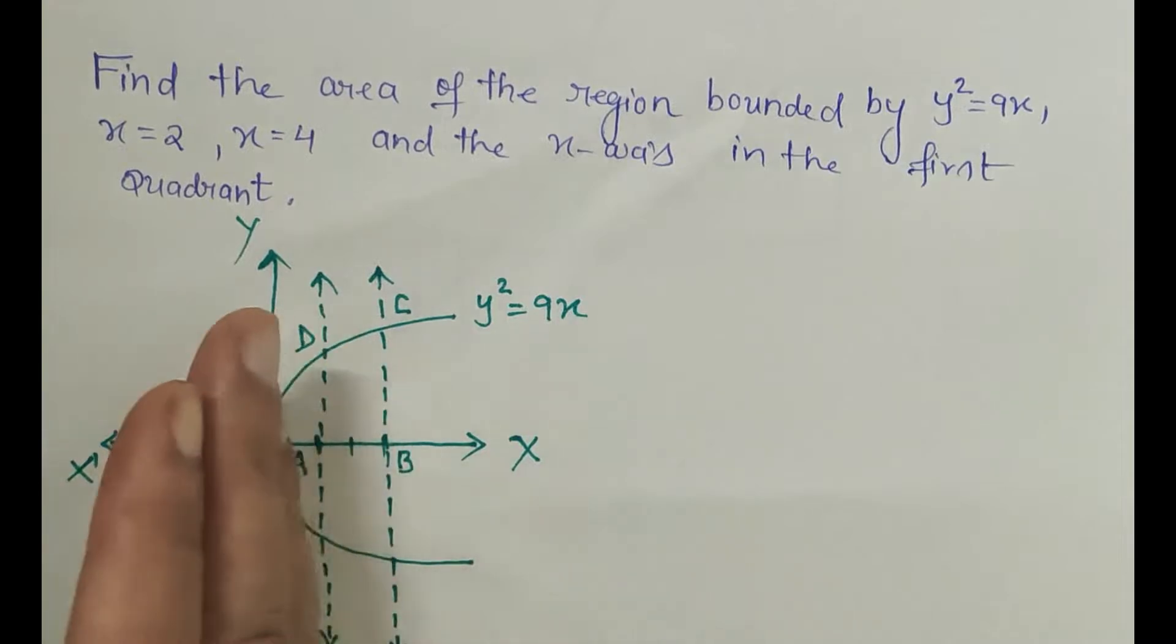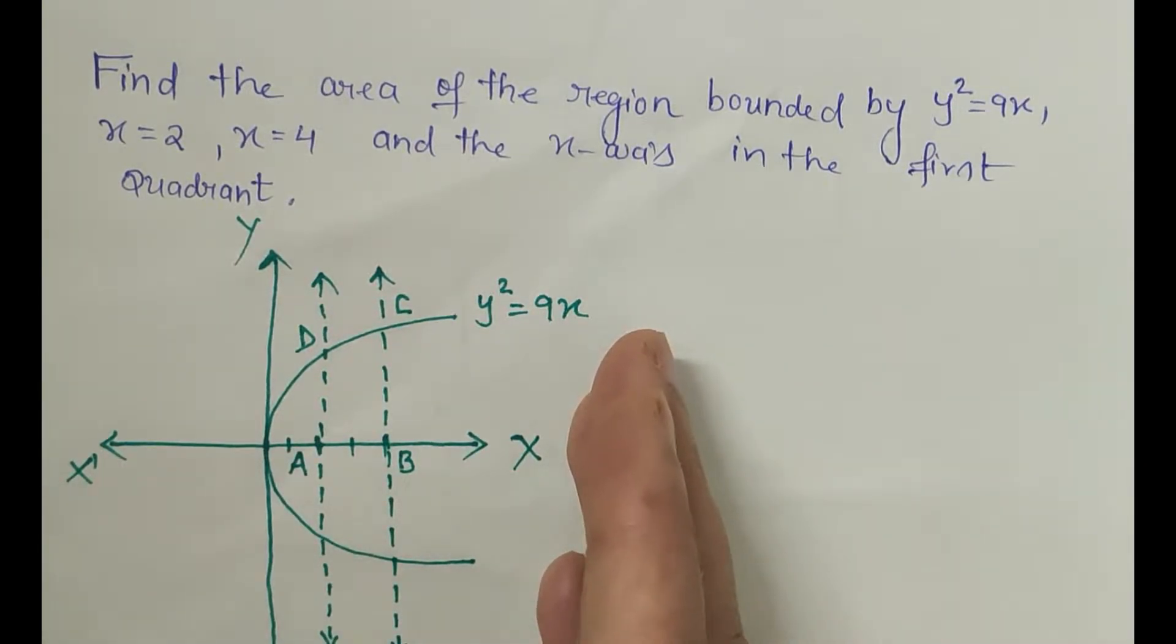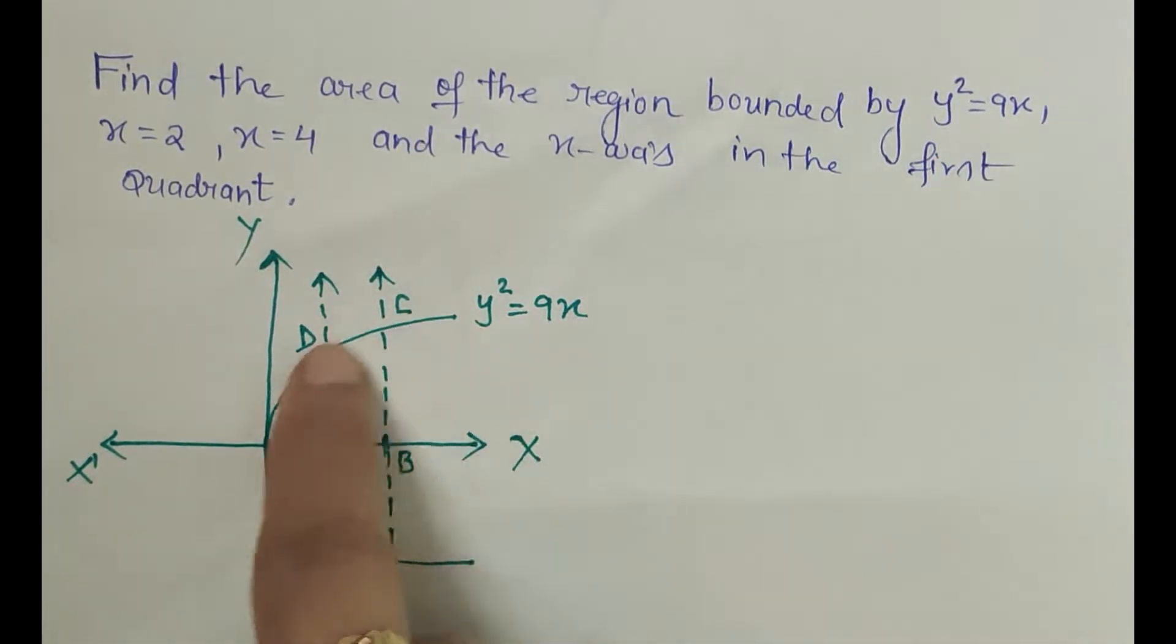So here y² is positive, that is why it is on the positive side of the x-axis, and y² = 9x. So this is the parabola.